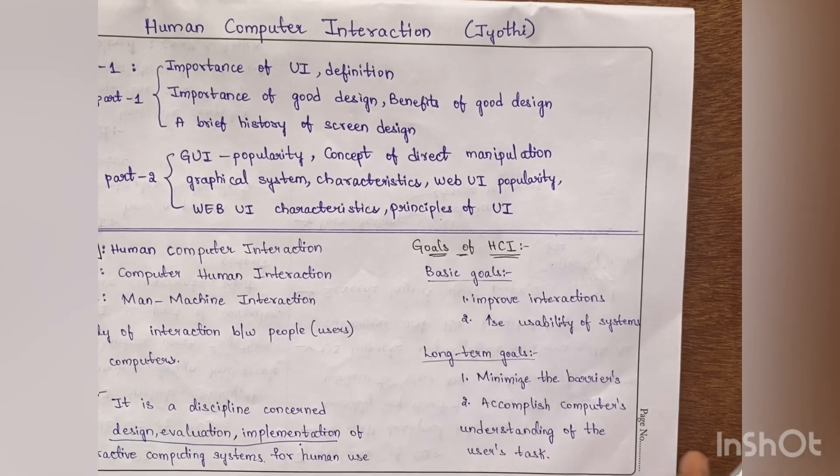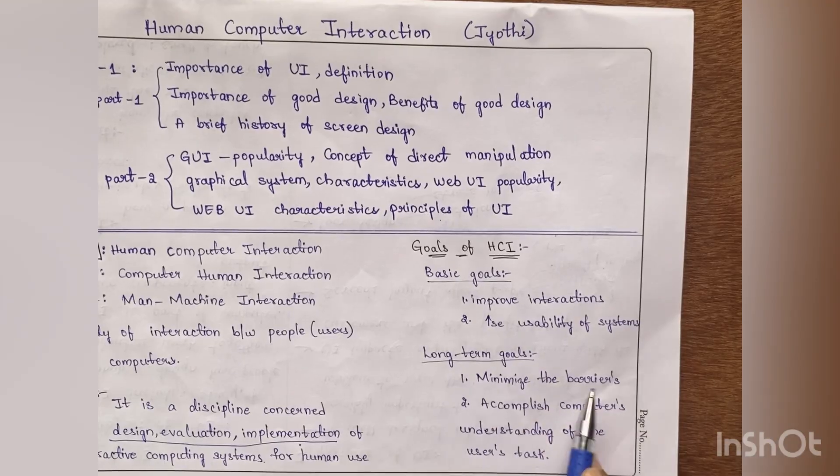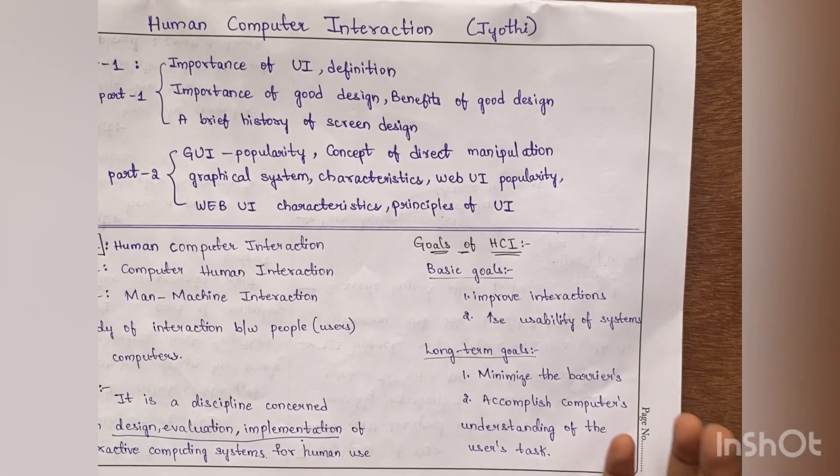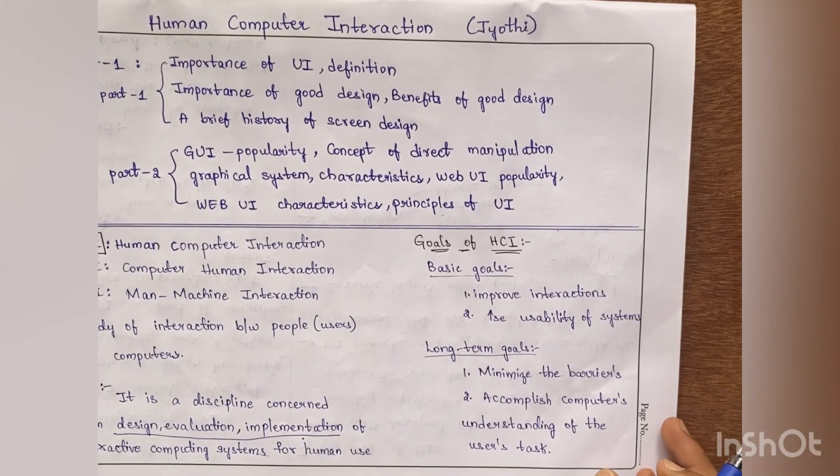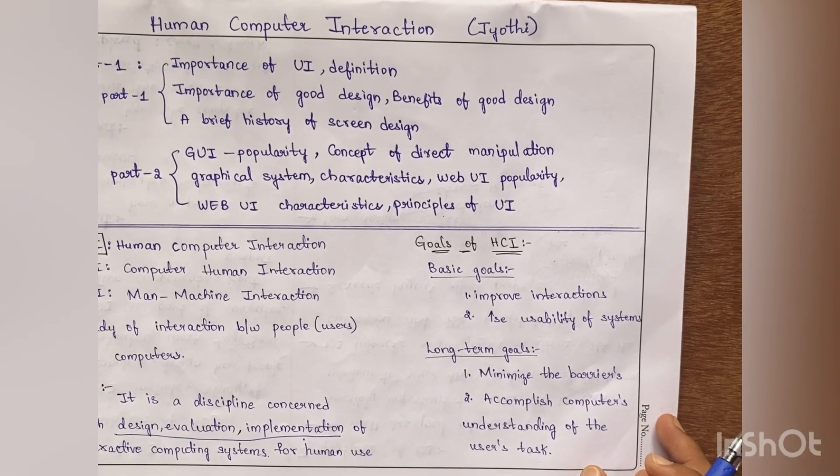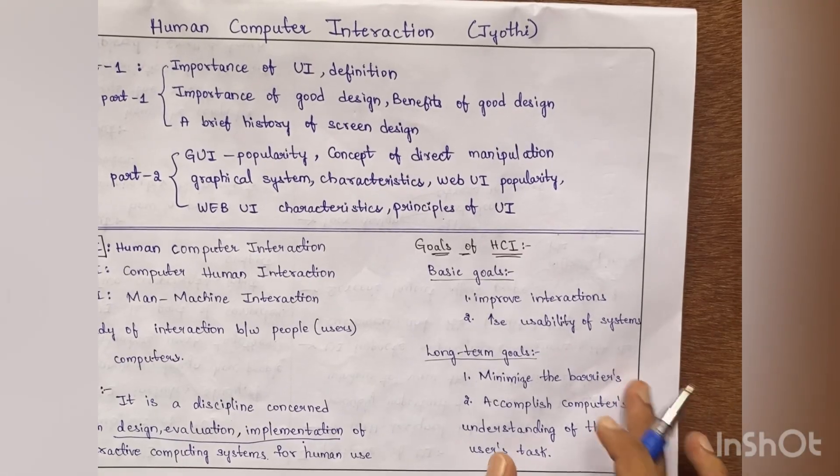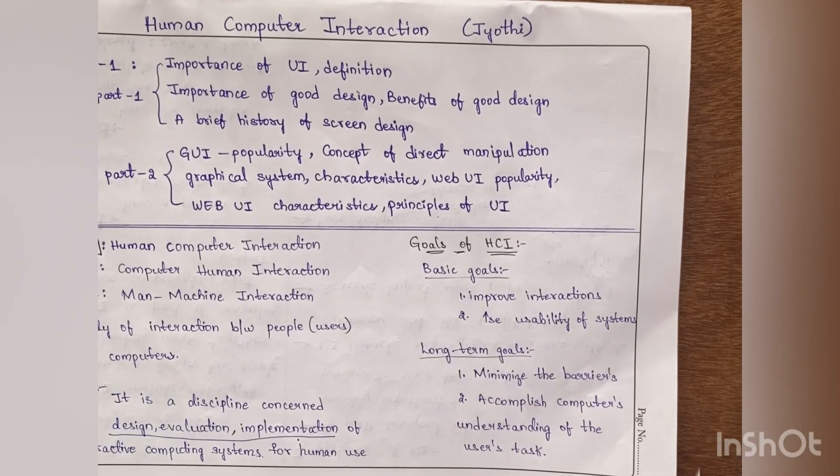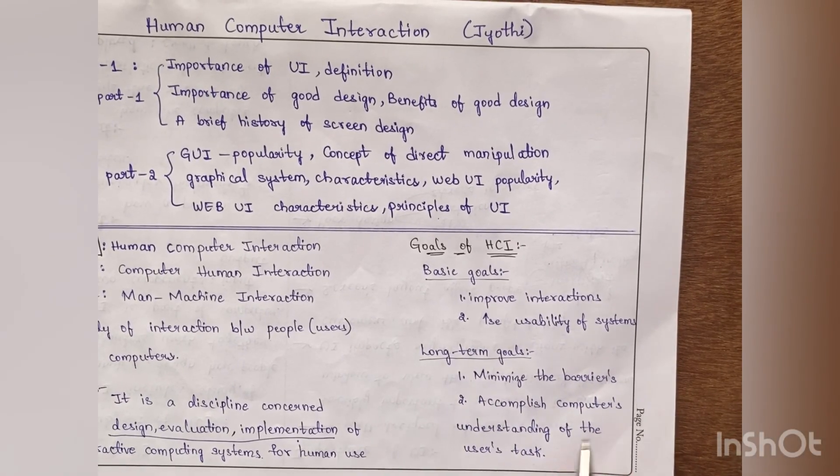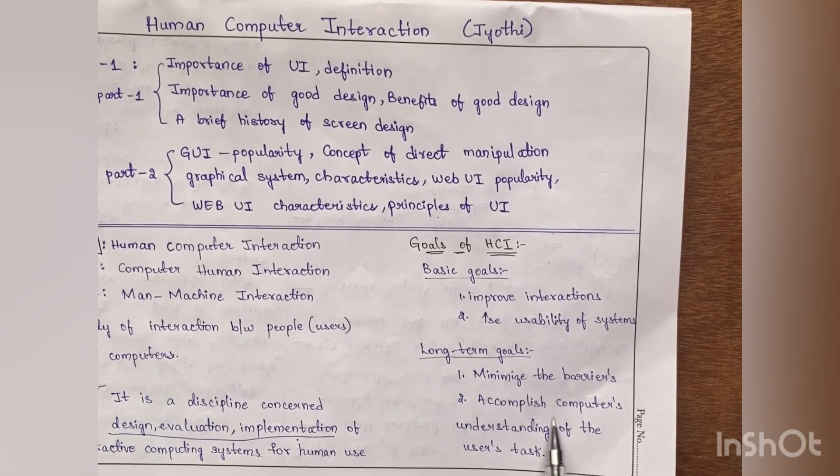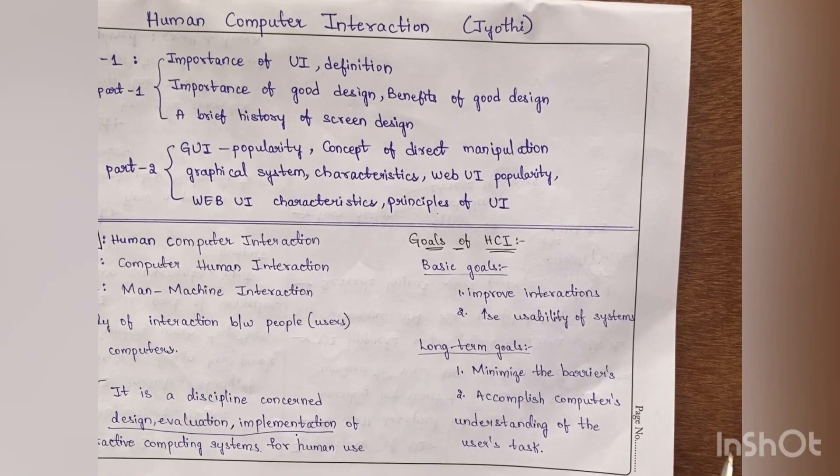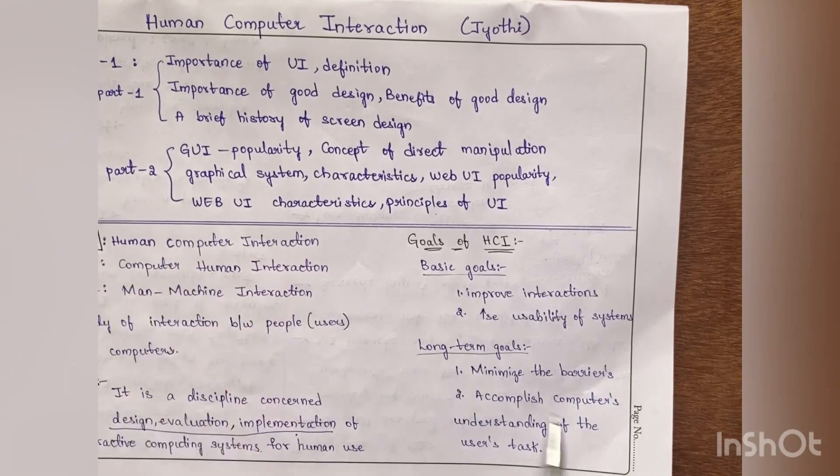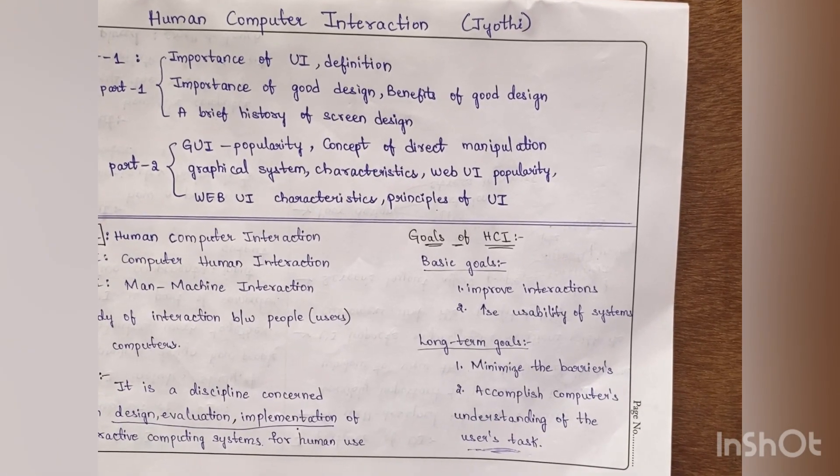And the long term goals are we need to minimize the barriers. When people are not habituated or not familiar with these things, they try to avoid usage of these computing systems. So we need to minimize these barriers. That means we need to design this interface in such a way that people get attracted and start using it more effectively. Other thing is we need to accomplish computer's understanding of the user's task. Here people are understanding computer's task, but computer should also understand the user's task.